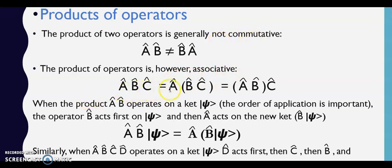A B C ka product lenge toh B C ko hum bracket mein daal hai aur phir A B ko uske baad phir C hai. Toh ye formula associativity ko dikhata hai. Toh ye product of operators follow karte hain.